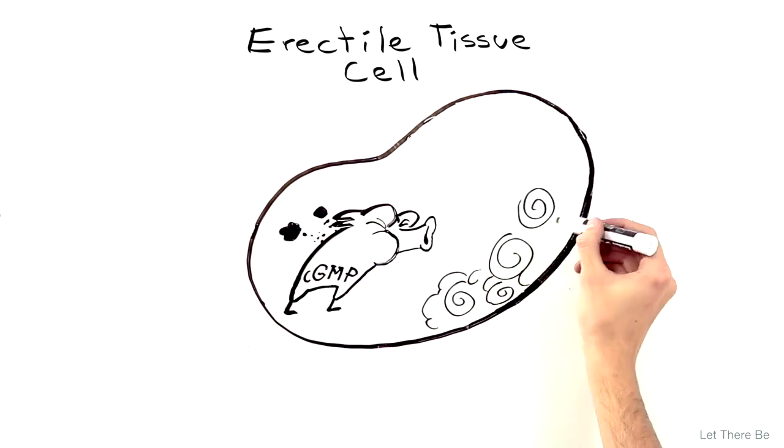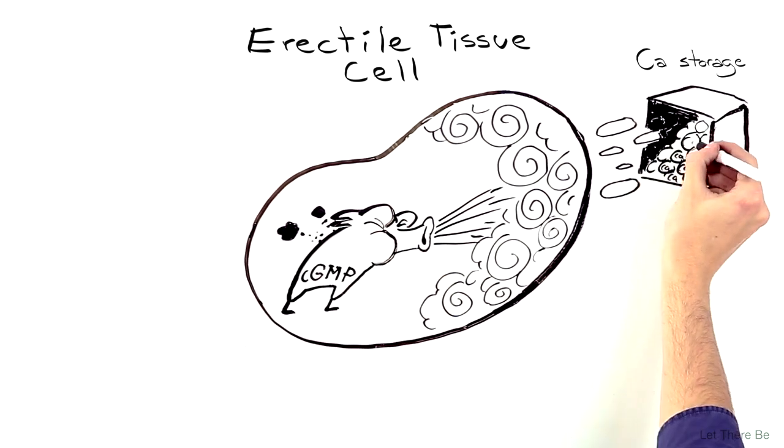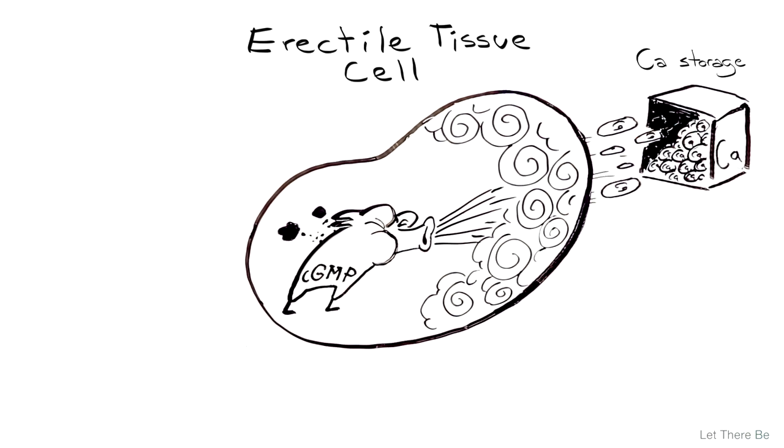Cyclic GMP decreases intracellular calcium stores within the cells of the corpora cavernosa, resulting in smooth muscle relaxation.